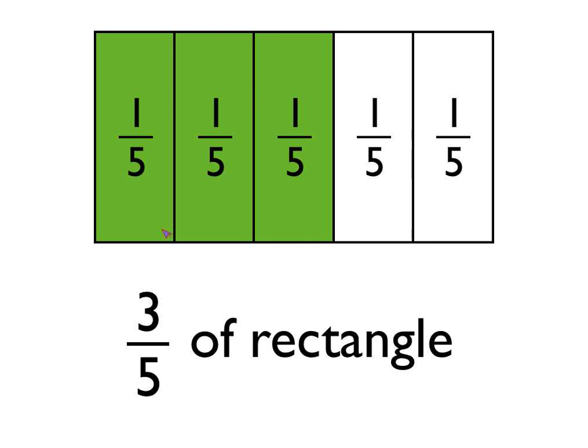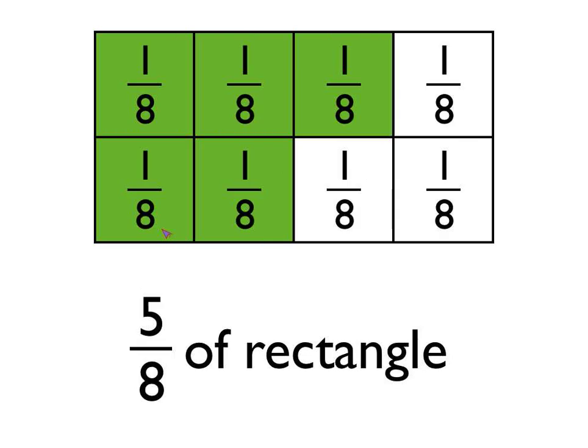Fifths mean that we take the rectangle and we divide it into five equal-sized pieces. Each piece is one-fifth. If we want three-fifths, we just take three of those, as you can see. Similarly, with this rectangle, we can see that five-eighths of it are shaded in.